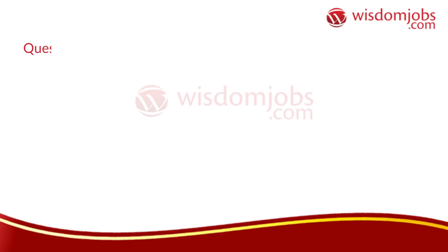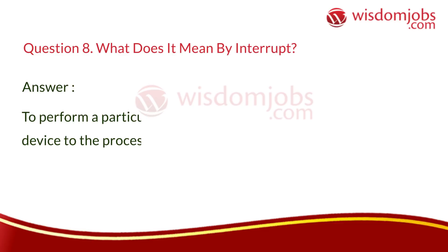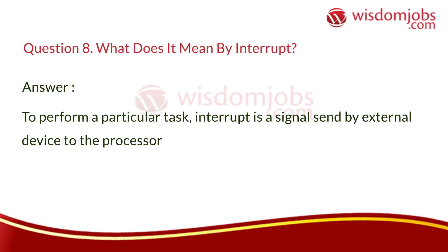Question 8: What does it mean by interrupt? Answer: To perform a particular task, an interrupt is a signal sent by an external device to the processor.